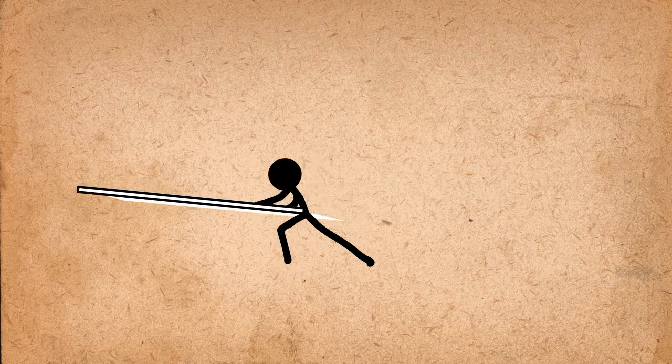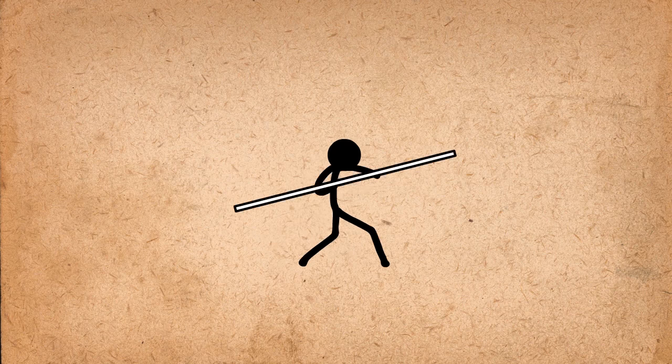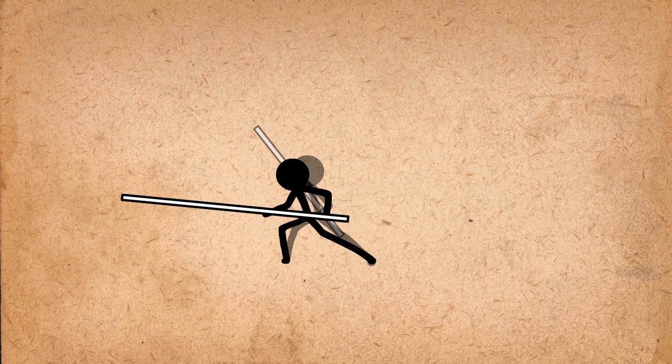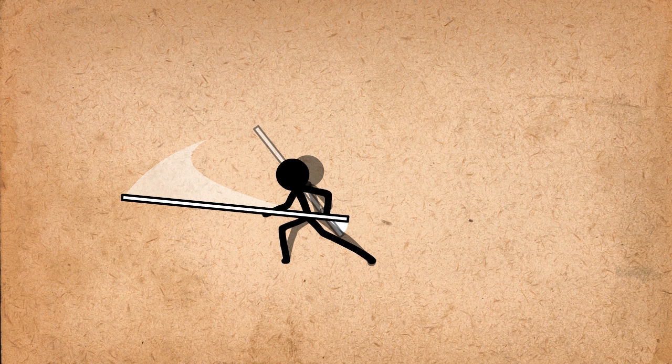When movements are very fast, you can add arcs in the form of a smear. Take the beginning and end pose and draw an arc in between and fill it in the same color as the object, maybe slightly transparent or fragmented towards the end of the action.